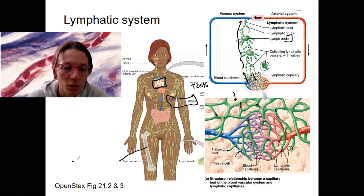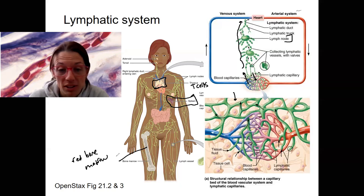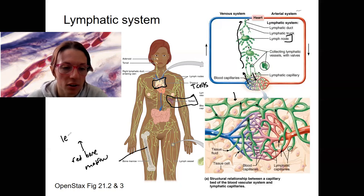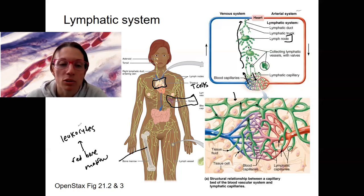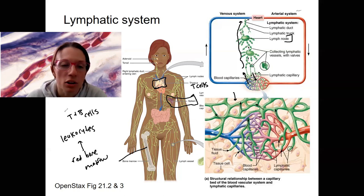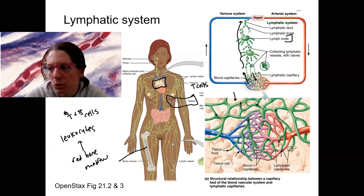Bone marrow — red bone marrow is the site of synthesis of all blood cells. So not just red blood cells, but leukocytes as well. Leukocytes are first born here and divide and proliferate throughout development. One type of leukocyte is lymphocytes. Lymphocytes include some cells that are important for innate immunity, but also those for adaptive immunity — T and B cells that you may have heard of. T and B lymphocytes are super important for adaptive immunity, and I have an extra credit option you can do looking into those more.